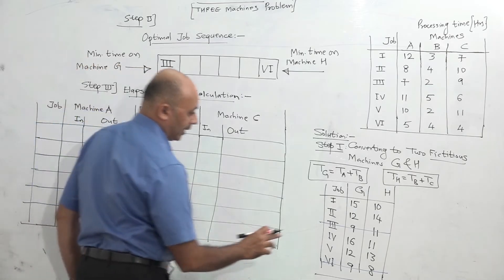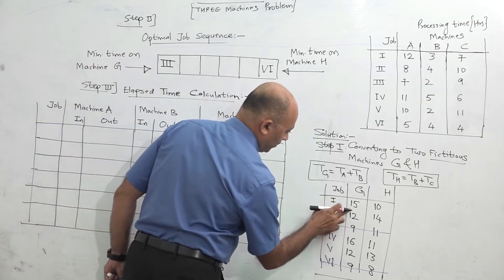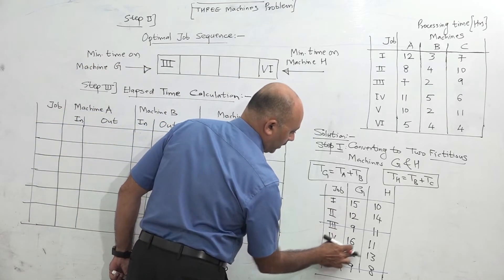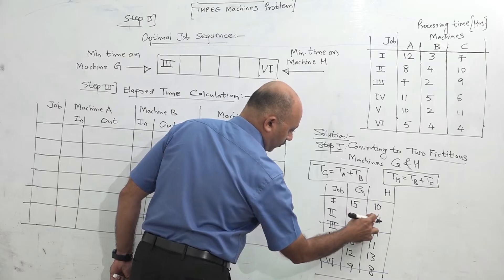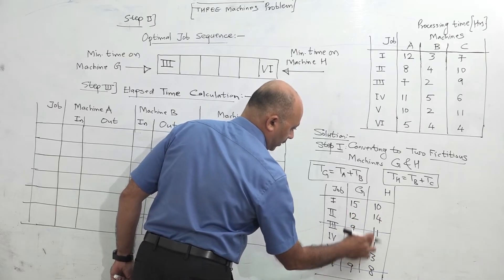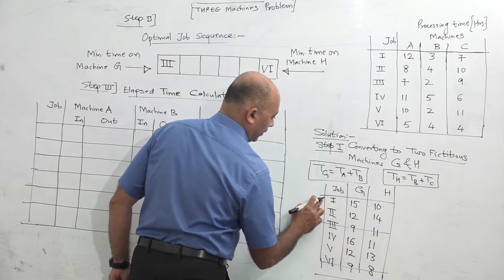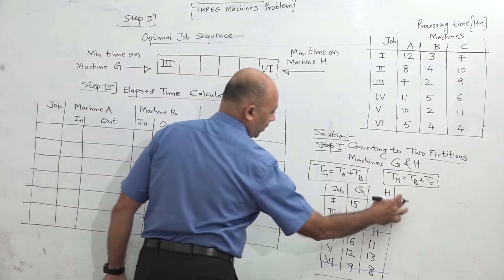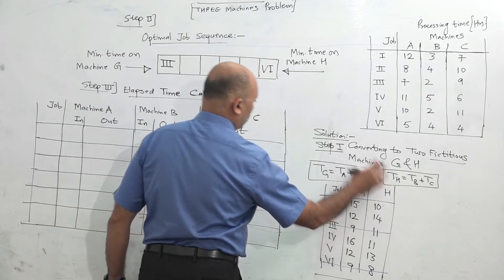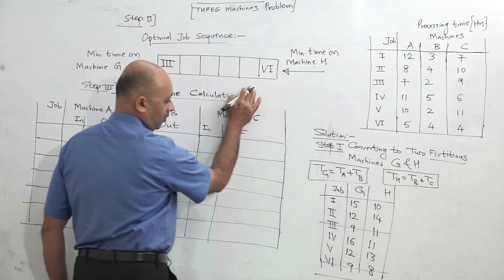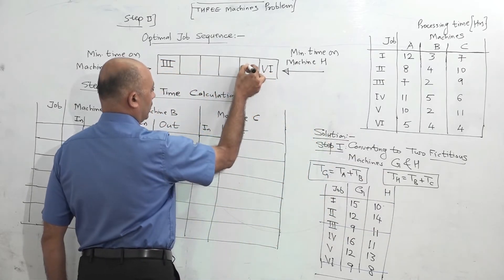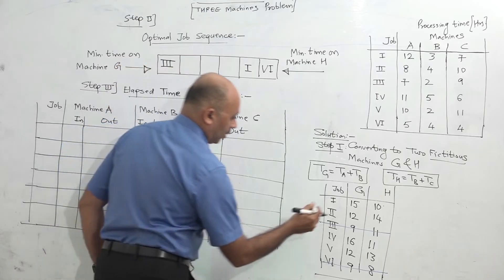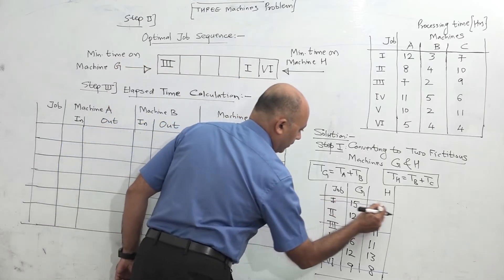Next, comparing remaining values — G: 15, 12, 16, 12; H: 14, 11, 13. The minimum is 10 for job 1's H value — wait, minimum is 10 on H for job 5. Actually, the minimum is 10, that is job 5's H. So job 1 goes from the right side and is written there. Job 1 is eliminated.